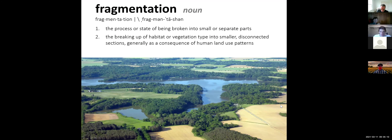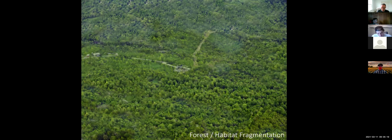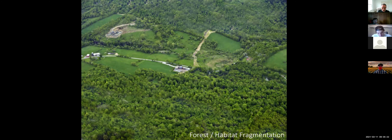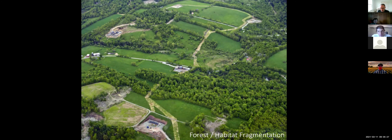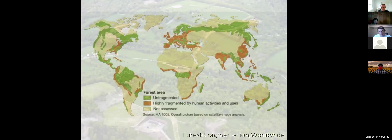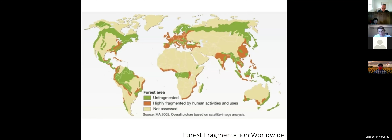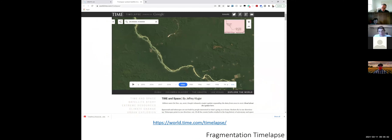We talked about how that results in habitat fragmentation, and talked about the definition of fragmentation. We looked at a time lapse of development in a forested area, and how that gradually over time eats away at the amount of available habitat and also the connectivity of that habitat. We talked about forest fragmentation worldwide and the massive amount of development in the Amazon rainforest.